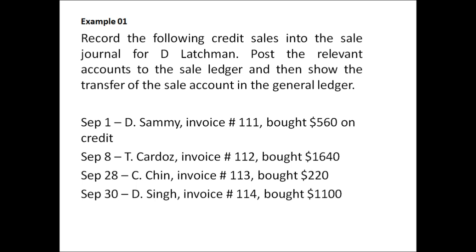Before we can prepare anything, we must read and identify what the question is asking us to prepare. The question is asking us to prepare the sales journal, the sales ledger, and post it in the general ledger. We also need to identify who this account is being prepared for — it is being prepared for D. Latchman.